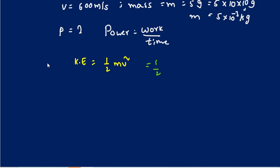The power of the gun is power equals one-half mv squared divided by time. So the kinetic energy formula is one-half times m times v squared, which equals one-half times 5 times 10 to the minus 3 times 600 squared, equals one-half times 5 times 10 to the minus 3 times 360,000.